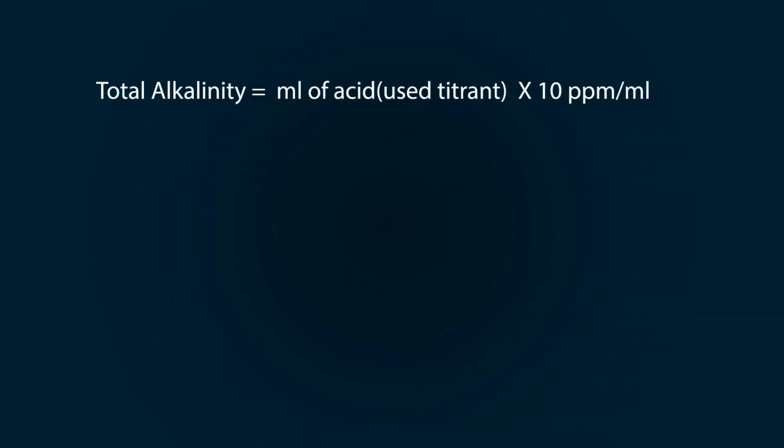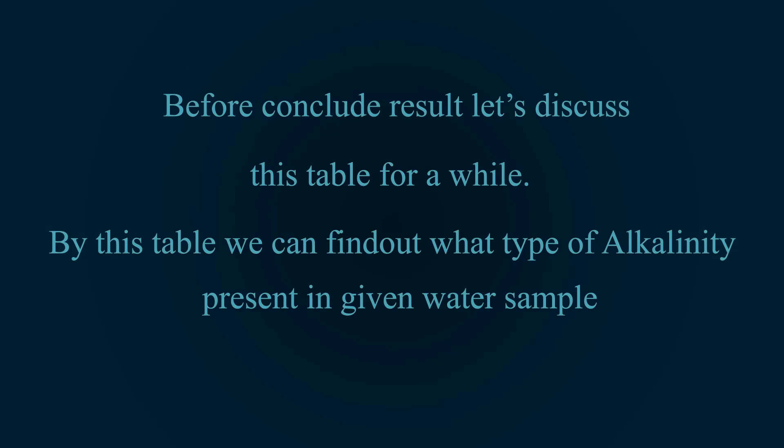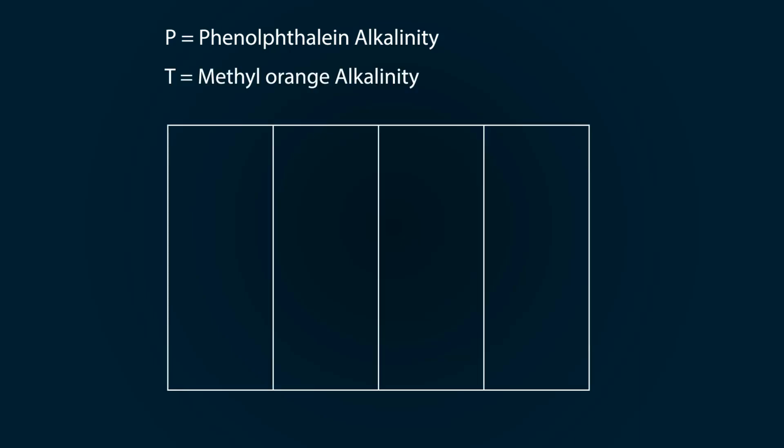For alkalinity, it has the same formula: ml of acid multiplied by 10. Methyl orange alkalinity will be 19.6 multiplied by 10 and we get our value as 196 ppm. Before concluding results, let's discuss a table through which you can get alkalinity of different water samples. P indicates phenolphthalein alkalinity and T indicates methyl orange alkalinity.